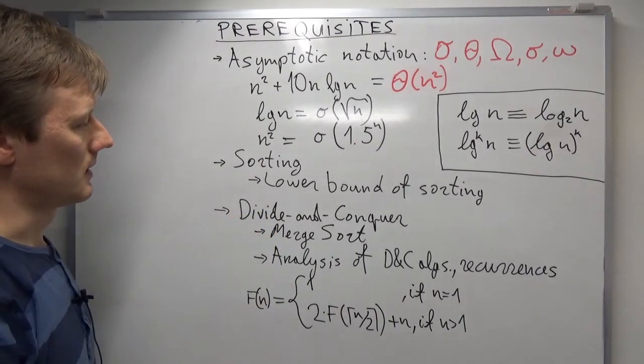A few words about the notation. We use the same notation as is used in the textbook. So lg of n is defined as logarithm base 2 of n. Likewise, lg superscript k of n is just log of n to the power of k.